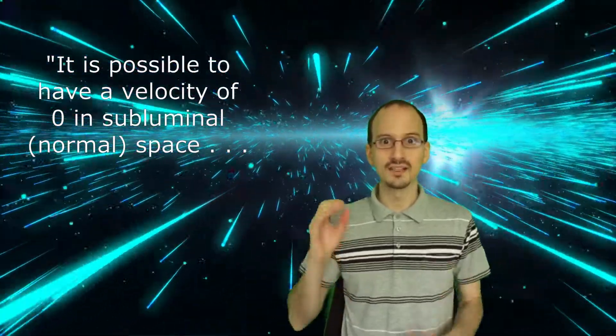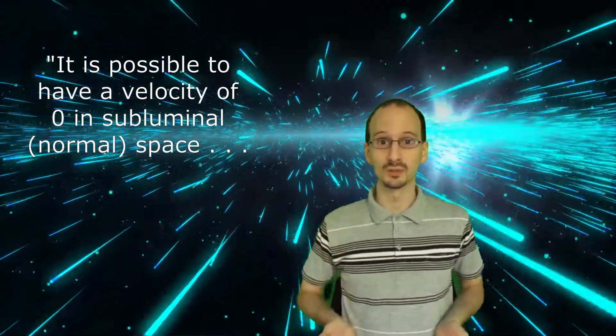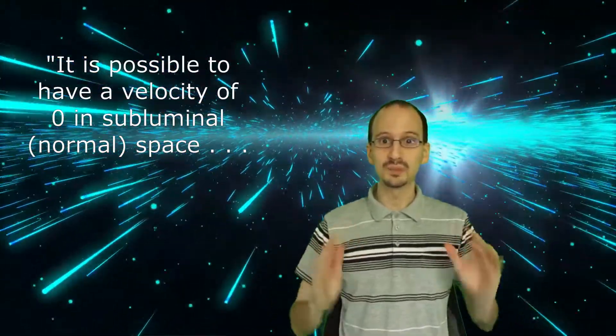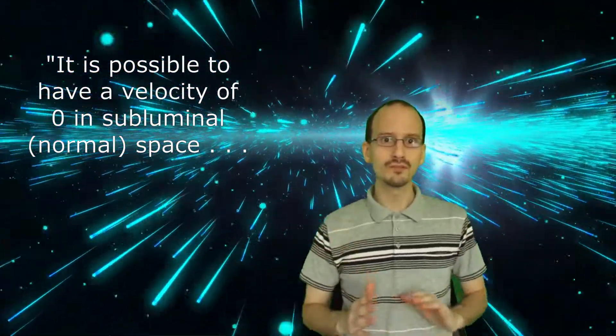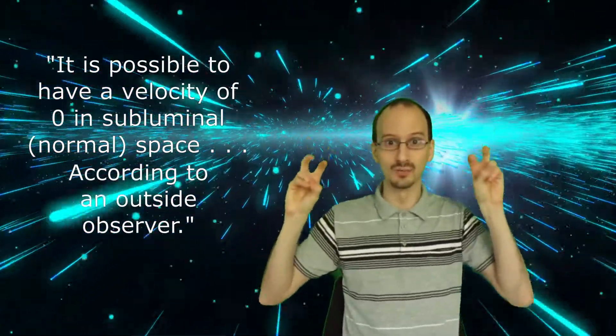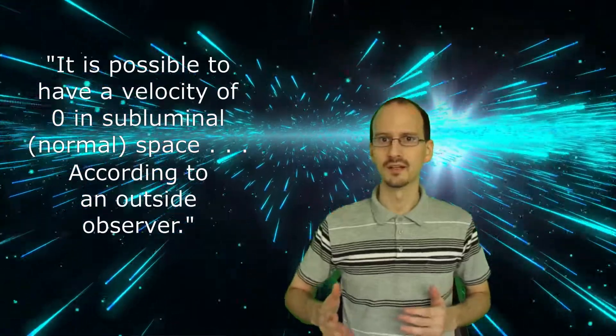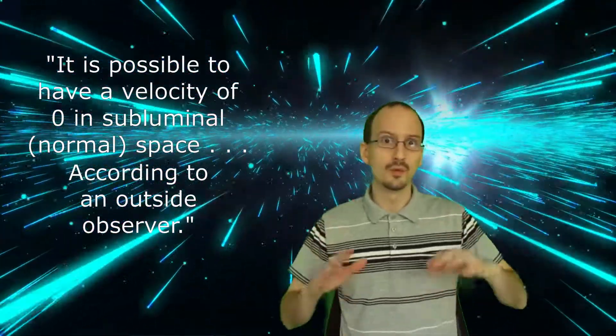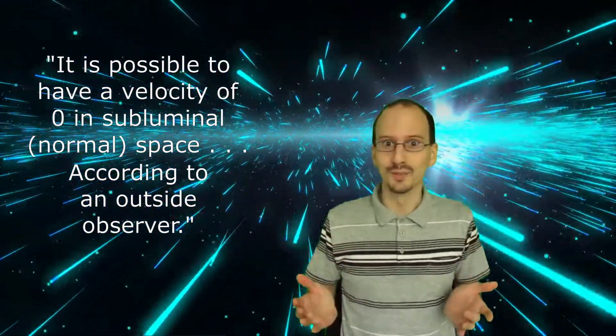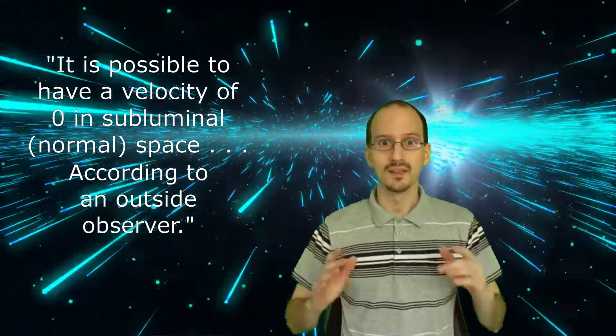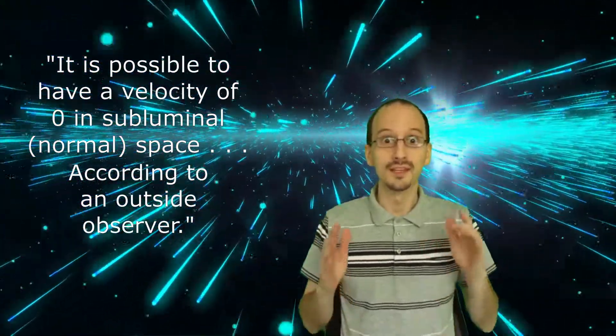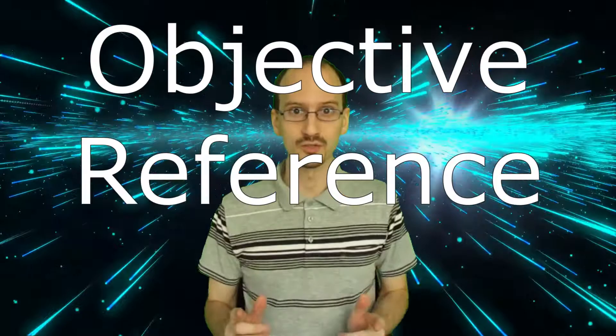In the appendix, it says it is possible to have a velocity of zero in subluminal space. And in explaining this, it invokes the reference frame of an outside observer. However, these statements make no sense in special relativity. But if they are meaningless, then why include them in the technical manual? The answer must be that in the Fractalverse, they do mean something significant. And what they mean is that there is an objective reference frame.